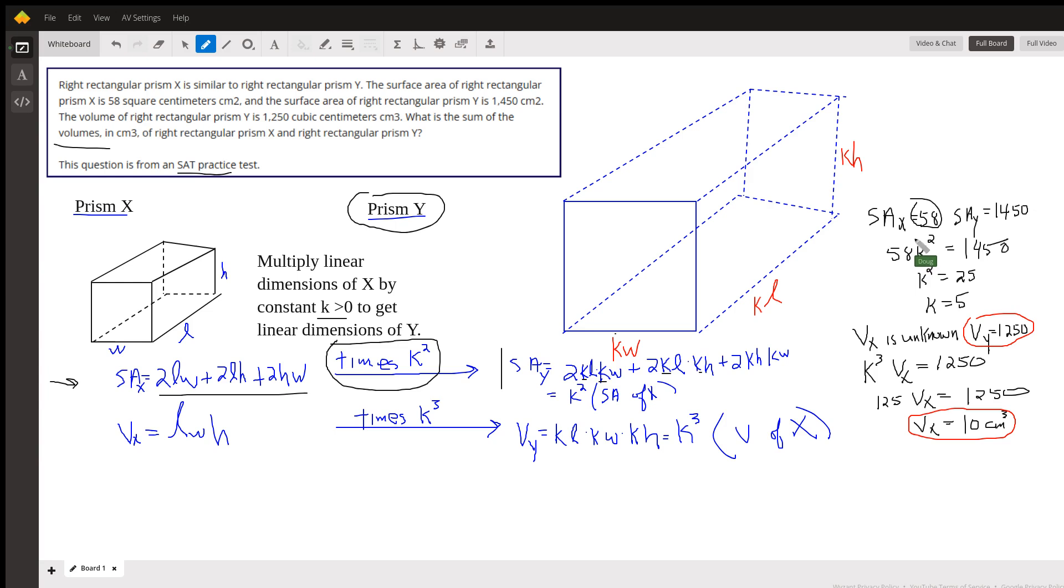Remember K is the constant that we multiply times the linear dimensions. So if we multiply K squared times the area, we'll get the new area. So solving for K squared, we get 25. So K is 5. That's the multiplier that gets us from prism X to prism Y.